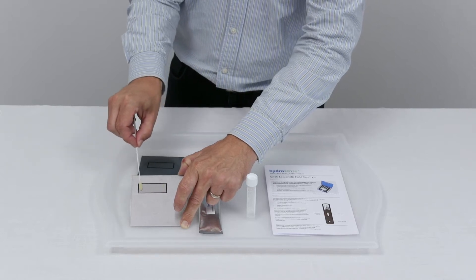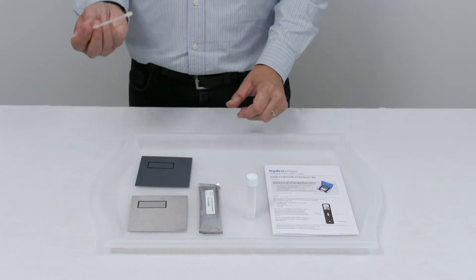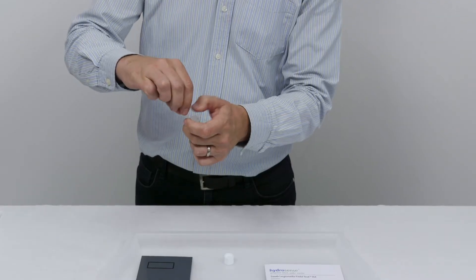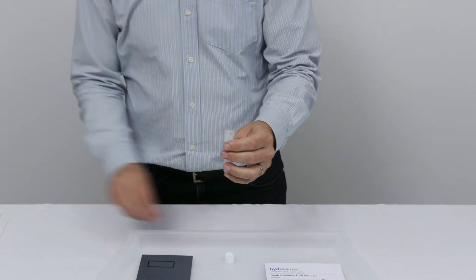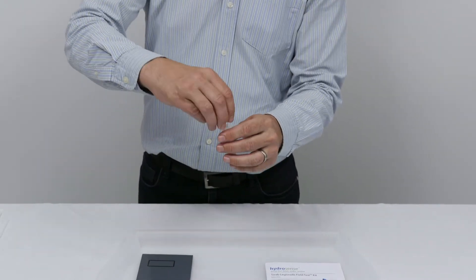Once we've swabbed the area, we can transfer the swab to the vial. On the swab handle there's a red mark, and at that point we can snap off the handle, which allows us to replace the lid on the vial.